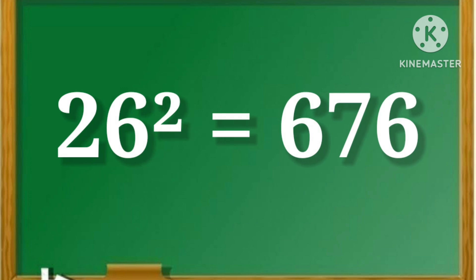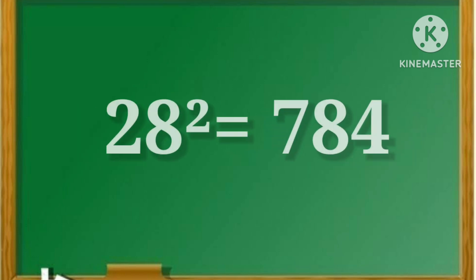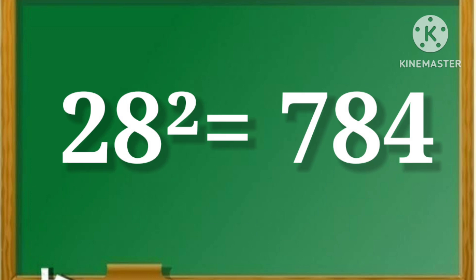26 square is equal to 676. 27 square is equal to 729. 28 square is equal to 784.